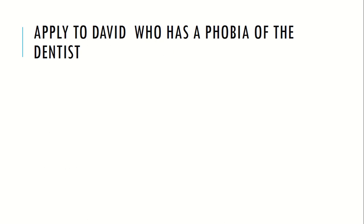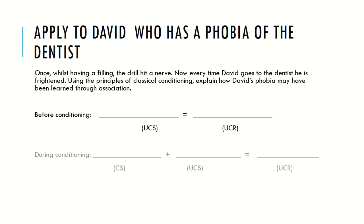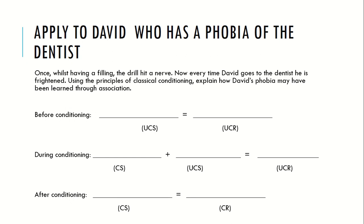Applying this to David: David once had a filling at the dentist where the drill hit a nerve. Now every time David goes to the dentist he is frightened. Before conditioning, the pain from the drill hitting the nerve produced the natural response of fear. During the conditioning experience, the dentist was neutral but was paired with pain to produce fear. If this happened again, the dentist becomes the conditioned stimulus, leading to a conditioned — or learned — response of fear.